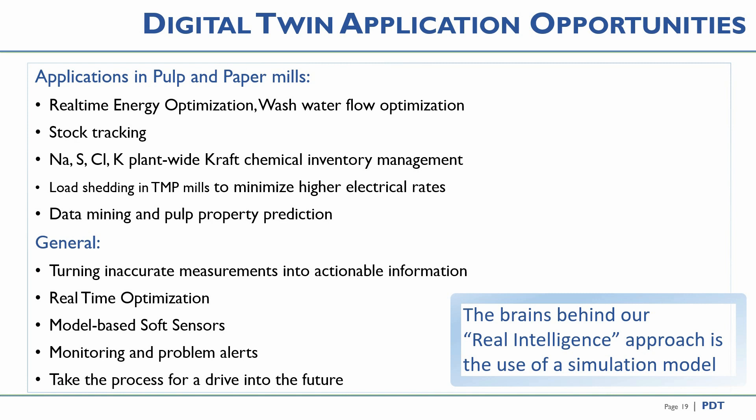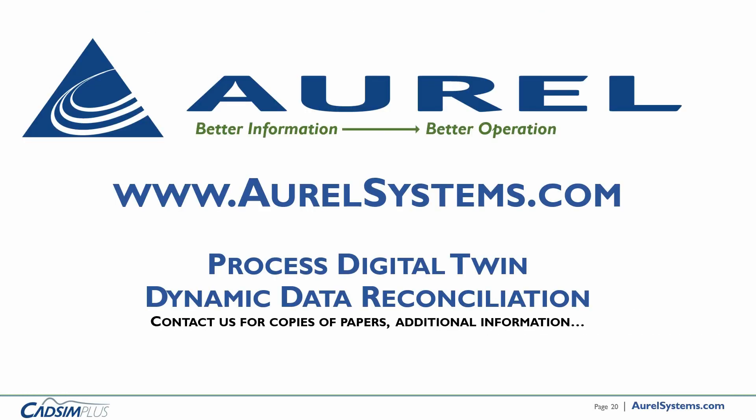I have shown two actual commercial applications of our model-based process digital twin. Other pulp and paper applications might be soda sulfur balancing in kraft mills, load shedding in a TMP mill during high electrical cost periods, consistency control, wash water control, and more accurate data mining and pulp property prediction. My hope is that this presentation has demonstrated why a first principles simulation-based method of tracking the process is essential for a good process digital twin. The benefits are to turn inaccurate measurements into actionable information, enable accurate real-time optimization, create model-based soft sensors, monitor and alert problems, and take the process for a drive into the future. Thank you.